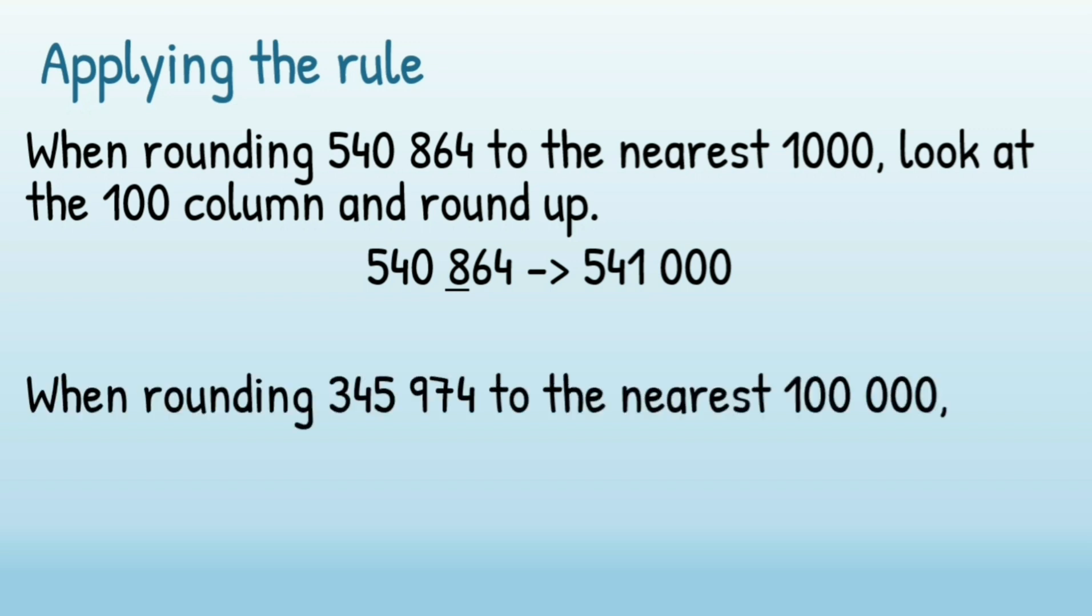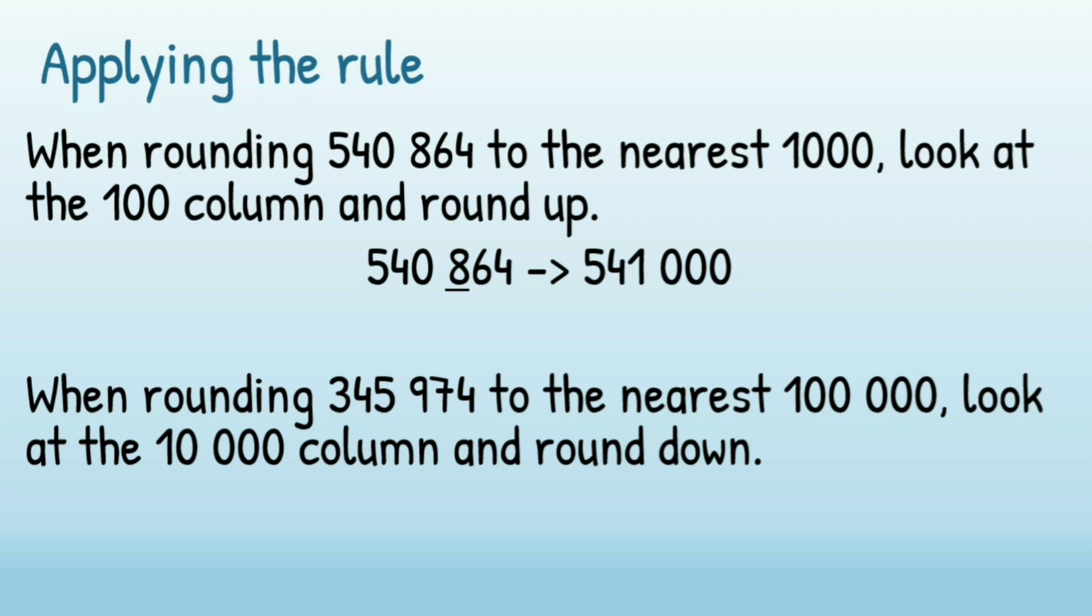If we have a look at another example, if you're rounding 345,974 to the nearest 100,000, you'd look at the 10,000 column. That would make you round down because the 10,000 column is a 4, that's below 5. So you would round your 100,000 down and stay at 300,000.